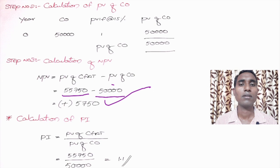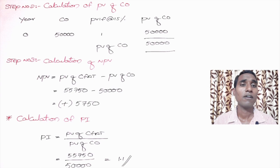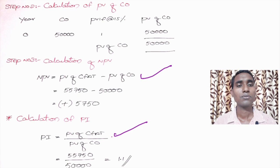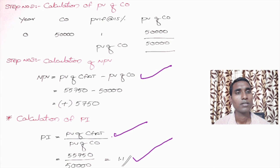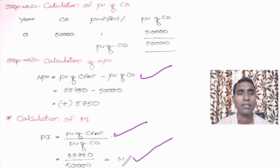The only difference between NPV and PI is the formula. For NPV we use PV of CFAT minus PV of CO. But for PI we use PV of CFAT divided by PV of CO. That is 55,750 divided by 50,000, which gives 1.1. It's very simple. If you understand the concept of NPV well, the concept of PI is very easy.